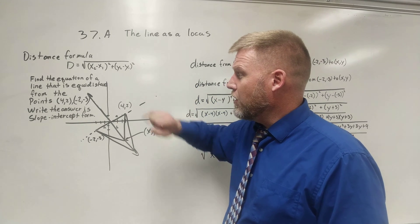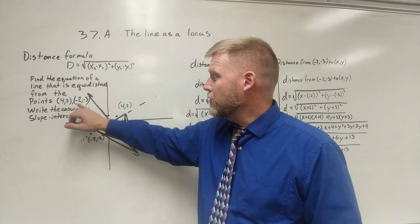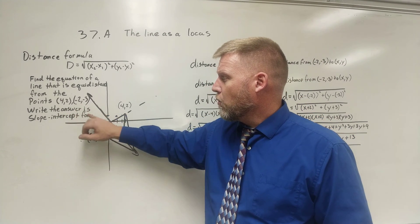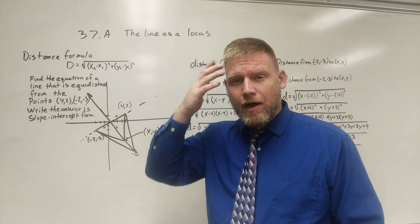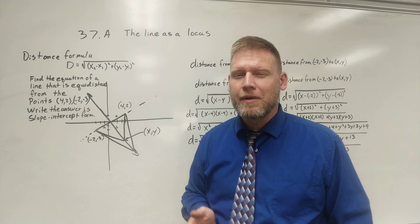Find the equation of a line that is equidistant from the point 4 comma 2, negative 2 comma negative 3, write the answer in slope intercept form. So in the back of our mind we have to keep it in there that slope intercept form is y equals mx plus b.